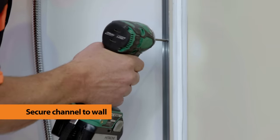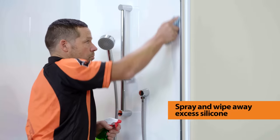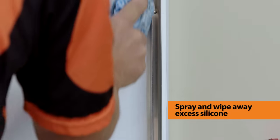Secure the aluminium channel to the wall with your fixings, then spray and wipe away any excess silicon.